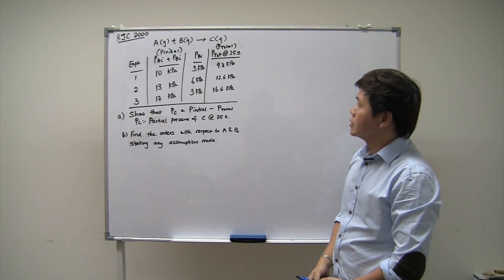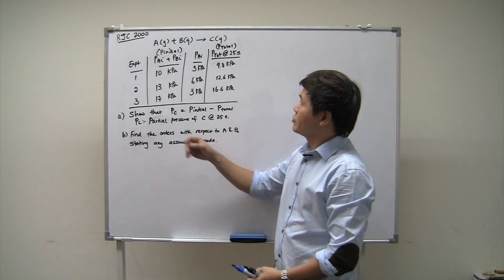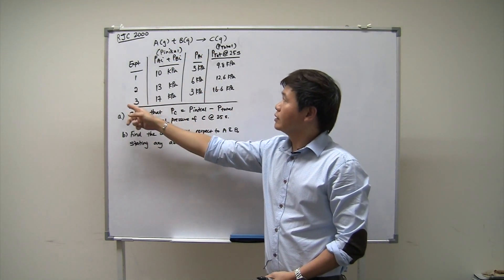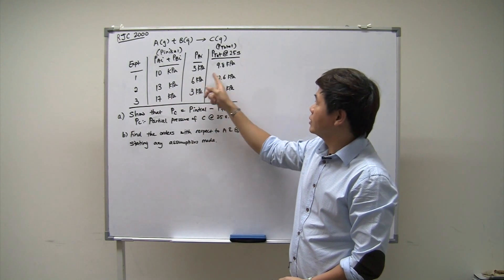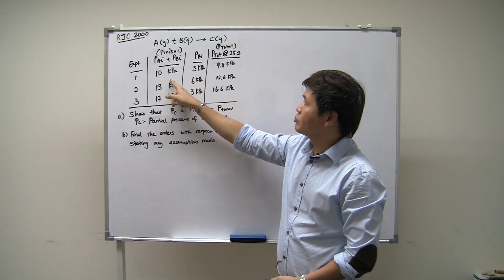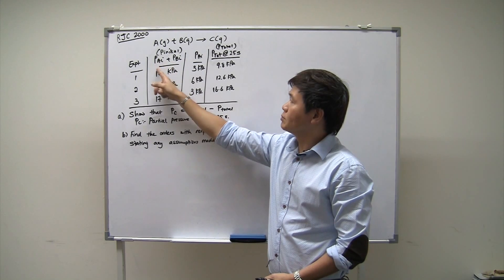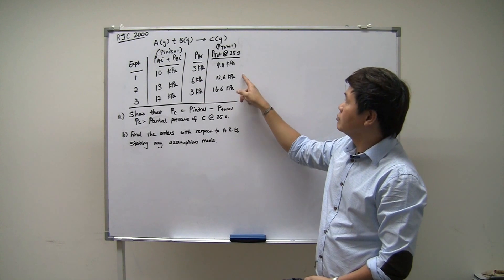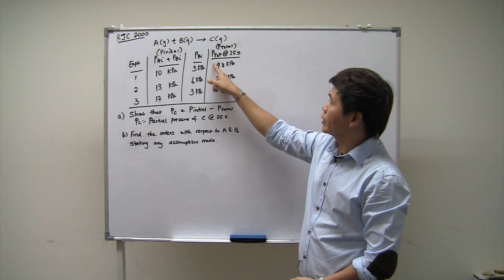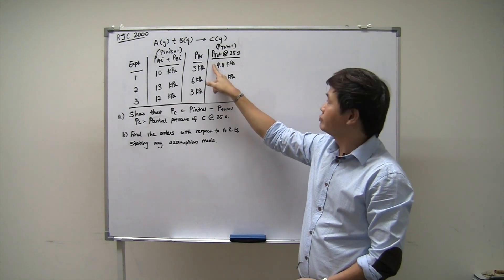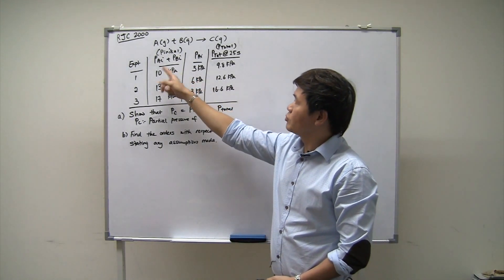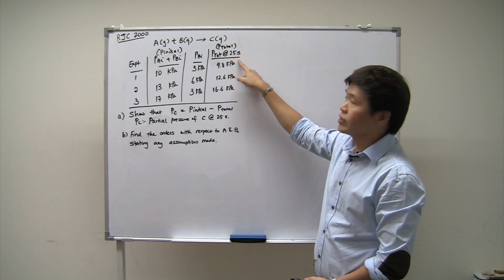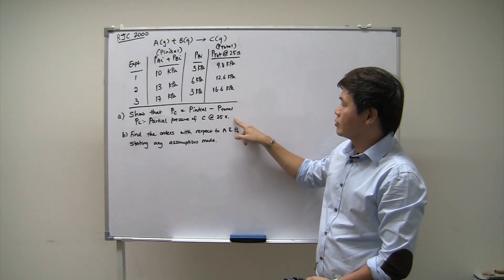This question is a kinetic study of a particle reaction between A and B to give C. There are three experiments conducted where three sets of data are collected. The first is the initial partial pressures of A and B. The second column shows the initial pressure of A. The third column is the total pressure of all the reactants and products at the 25th second. I'm going to denote the initial pressure of A and B as P_initial, and the total pressure at the 25th second as P_total.